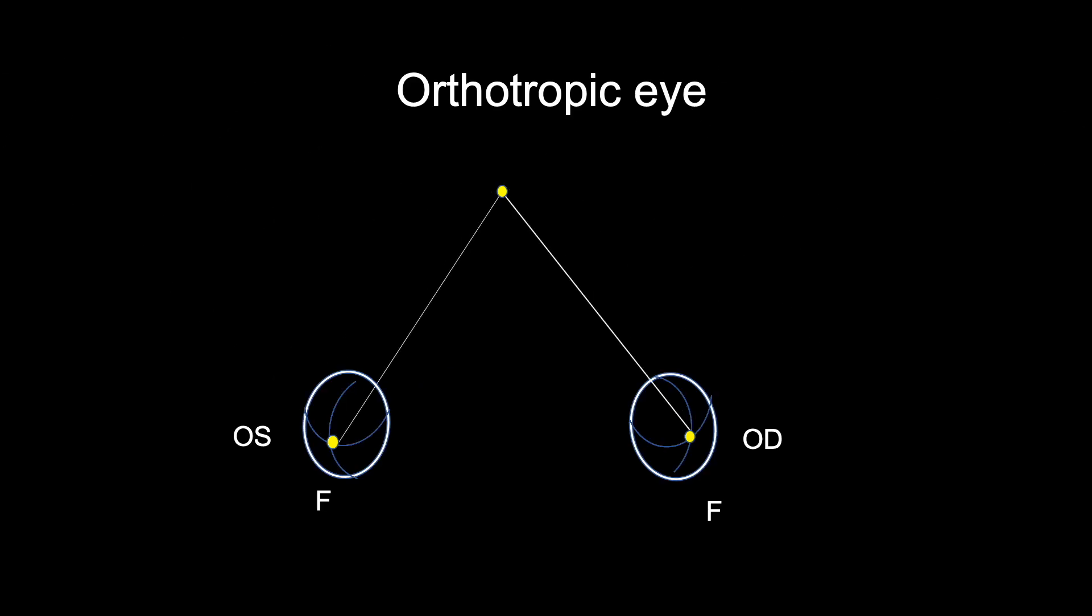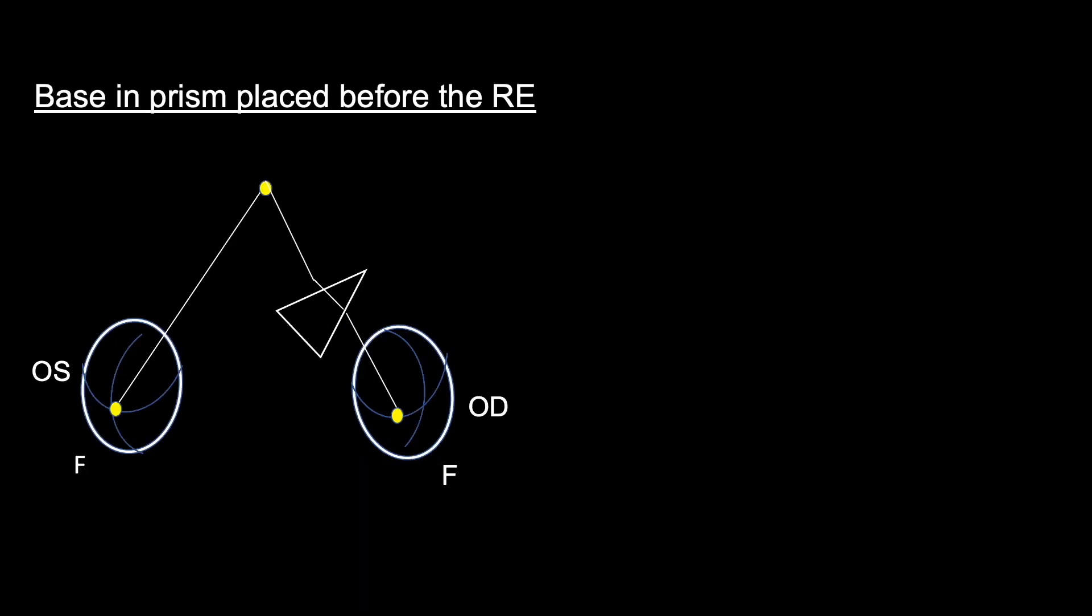First, how to make prism-induced strabismus. This is the orthotropic eye. When the base in prism is placed in front of the right eye with left eye fixing, the retinal image is displaced nasal to the fovea and the right eye moves temporally.